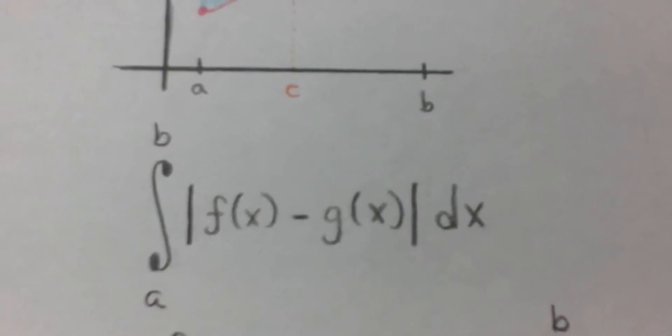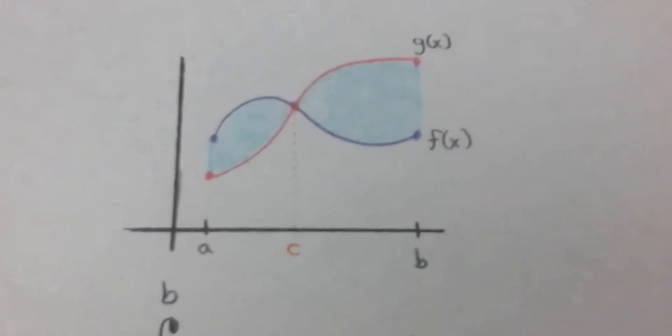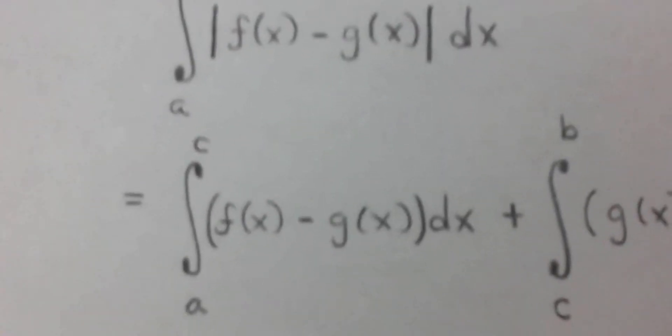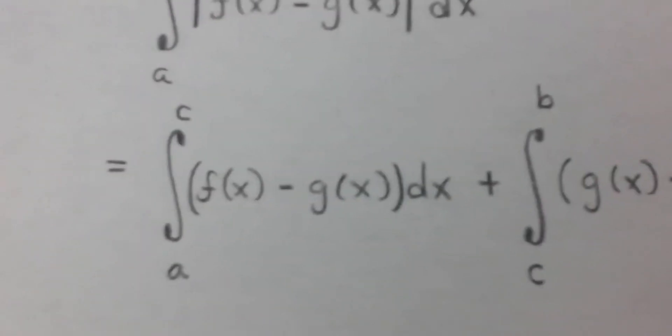But if I know where the two curves meet, which means they meet at c, then I can split this problem up into two separate problems and I can drop the absolute value.